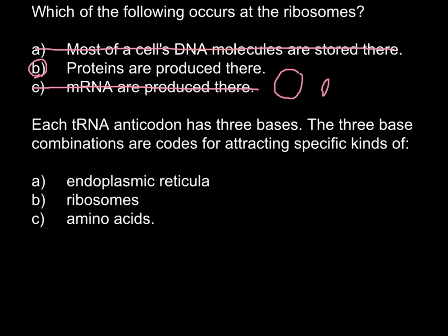And now we can go to the second question. Each tRNA anticodon has three bases. The three base combinations are codes for attracting specific kinds of — what?